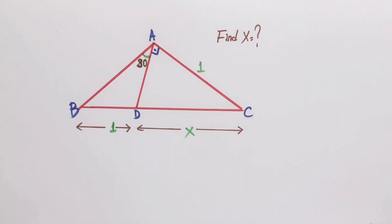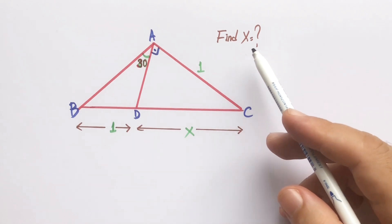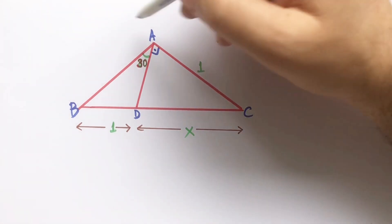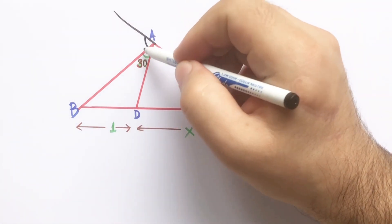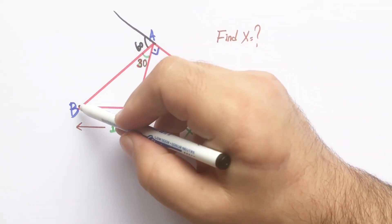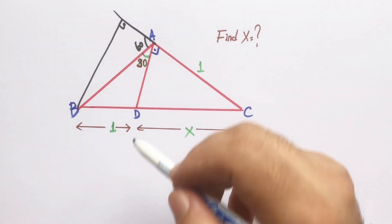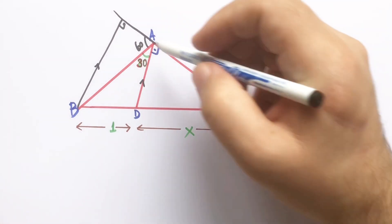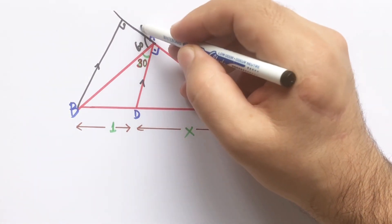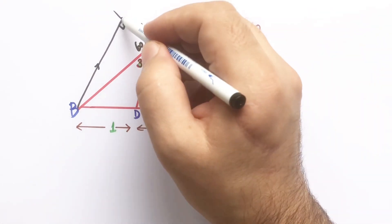Hello everyone. In this video we have an olympiad question — some lengths and some angles are given, and the length of DC is asked. First step: let's extend this corner. We know that this angle must be 60 degrees, and let's draw a perpendicular line across to 60 degrees. These two lines are parallel. Let's call this point A, and this point P.